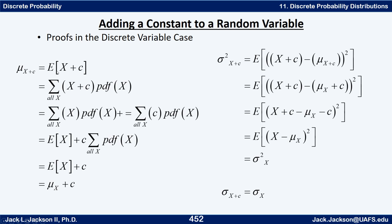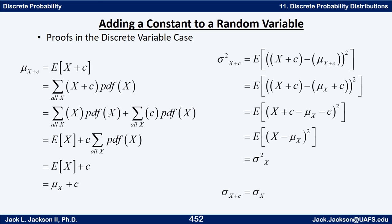The mean of x plus c is the expected value of x plus c, which is the sum over all x of (x plus c) times the PDF of x. Distributing gives x times PDF of x plus c times PDF of x. Splitting into two sums, the first is just the expected value of x. In the second, c factors out and the PDF values sum to one, so we get mu of x plus c.